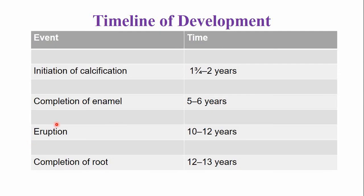The timeline or chronology of development of the mandibular first premolar: calcification begins near the age of two years. The crown is completed by the age of five to six years, and the tooth emerges into the oral cavity by the age of 10 to 12 years. Adding plus two, the root is completed by the age of 12 to 13 years.